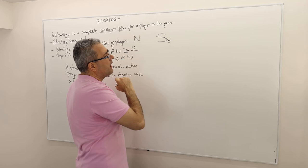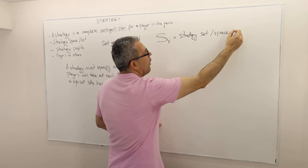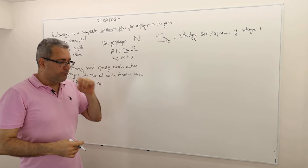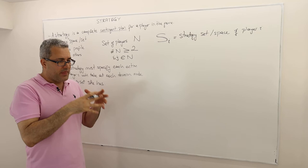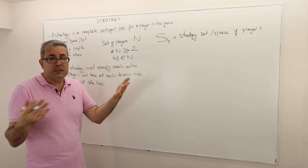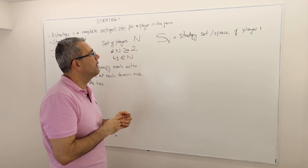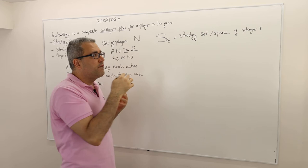So S sub i is basically strategy set or sometimes some textbooks call it space, strategy space, of player i. Obviously, in game. Sorry, in a specific game. You fix the game. And then, in this game, there are, sorry, a set of strategies. If you change the game, which means completely different set of rules, set of, completely different set of actions, completely set of players maybe. And so, the set of strategies will be also different. So fixing the game, S_i is the strategy set or strategy space of player i in this game.